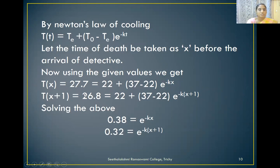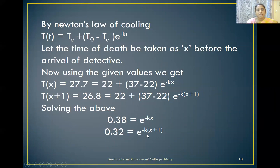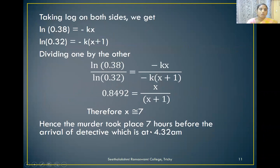Similarly, after an hour, using the same equation and substituting the values, T(x+1) equals 26.8, which equals 22 plus (37 minus 22) times e to the power of minus k(x+1). By solving the above two equations, we get 0.38 equals e to the power of minus kx, and 0.32 equals e to the power of minus k(x+1). Taking log on both sides and dividing the first equation by the second equation, and by doing mathematical simplification, we get approximately x equals 7.